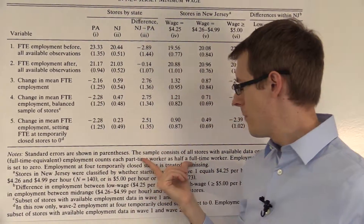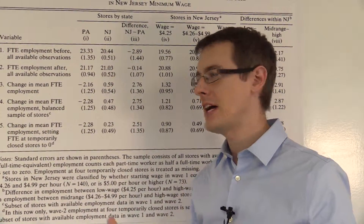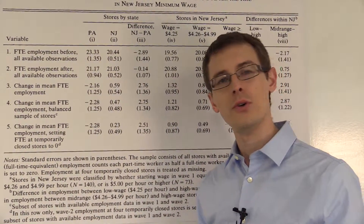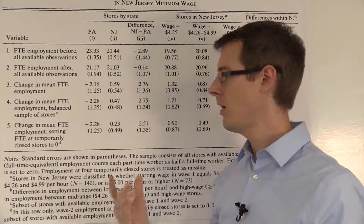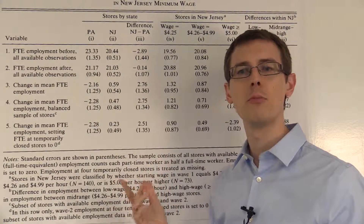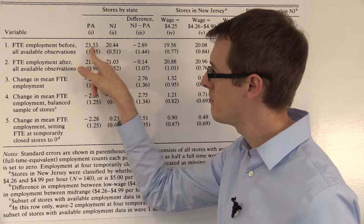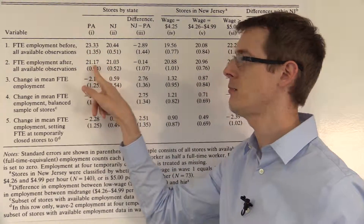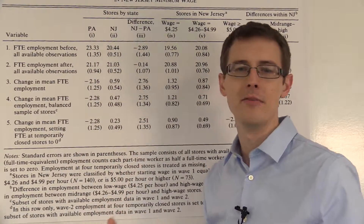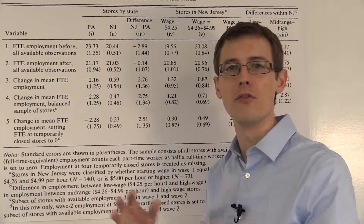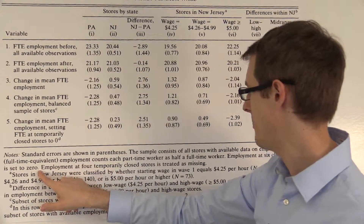What they're saying is, not everyone who works at fast food stores works full-time — some people work part-time. So how do we count them? Just half. So 0.5 of a worker is somebody who works part-time. That's why we have numbers like 0.33 or 0.17 — it lets us interpret what it means to have fractional workers.